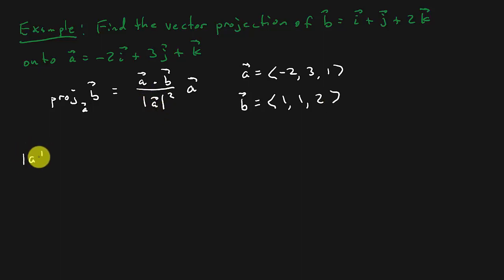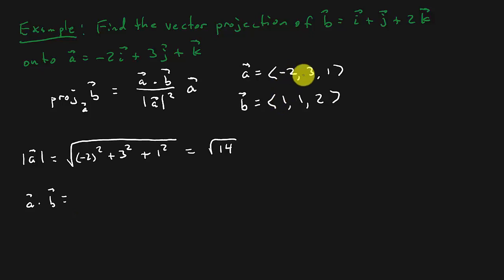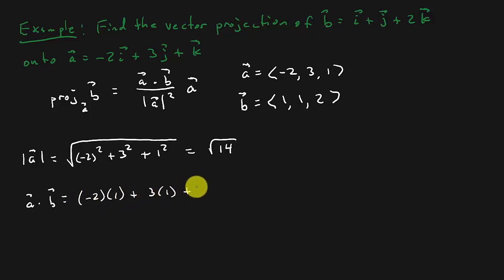We need the magnitude of A. The magnitude of A is the square root of (-2)² + 3² + 1², which gives us the square root of 14. Now let's find the dot product of A and B: it's (-2)(1) + (3)(1) + (1)(2), which gives us 3.